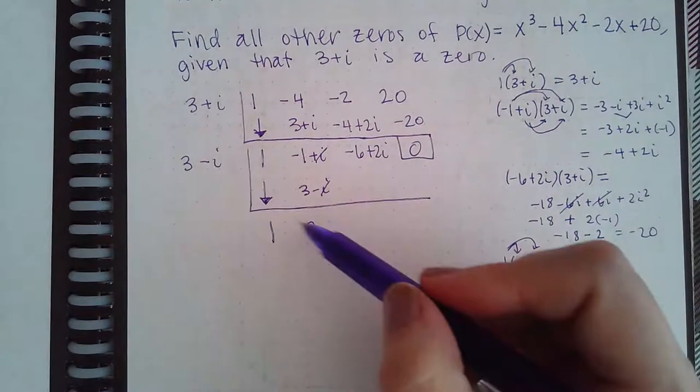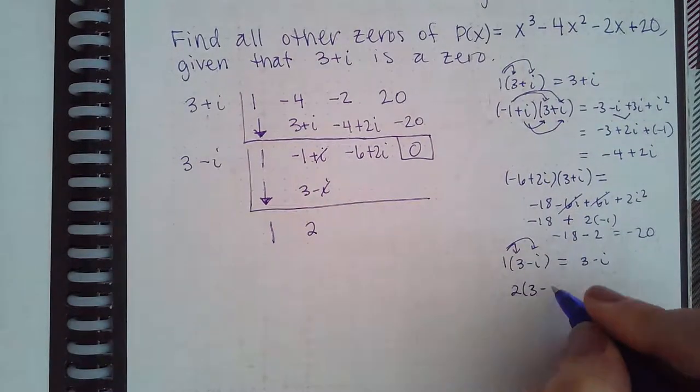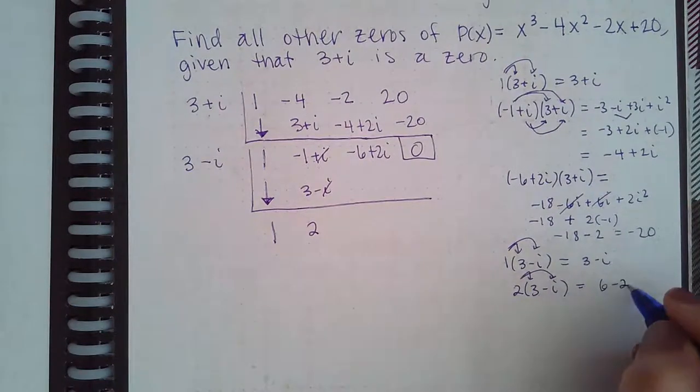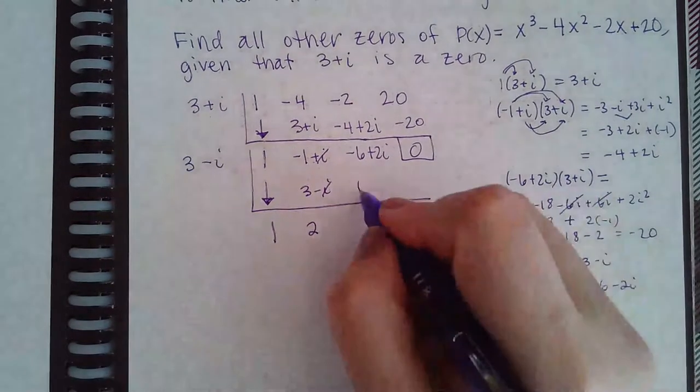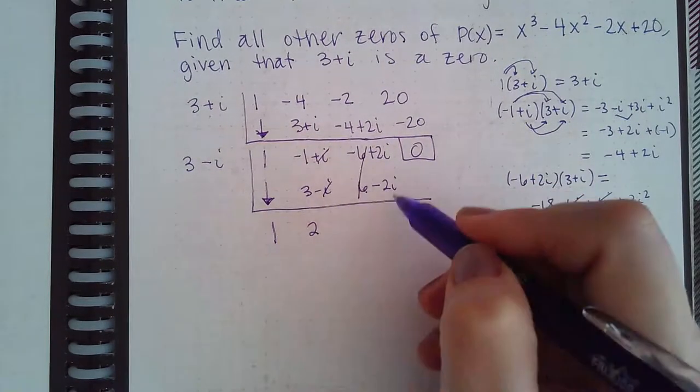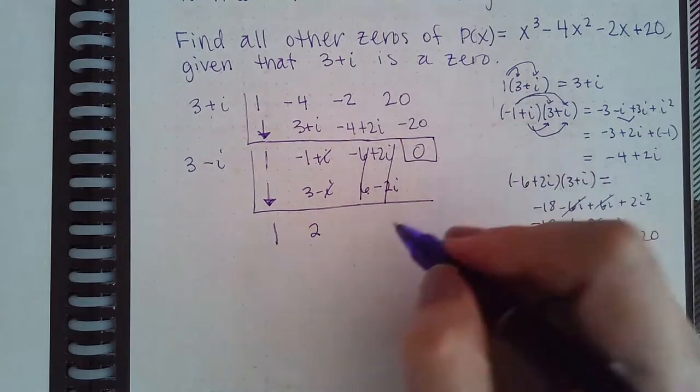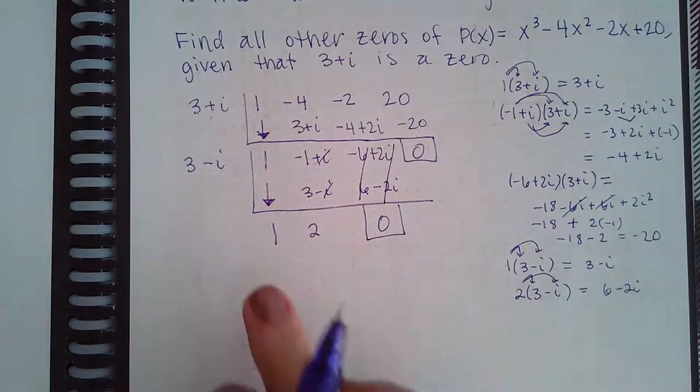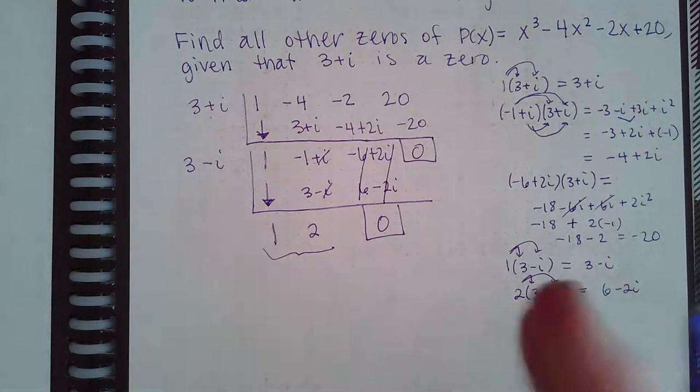Now I multiply these two things together. I end up distributing the 2 and I get 6 minus 2i. That's positive 6 minus 2i. Combine the real numbers together, combine the imaginaries together - they both turn out to be 0, which means my remainder is 0.